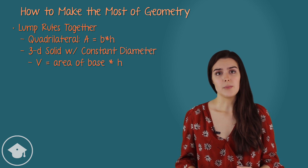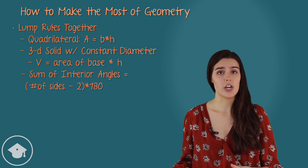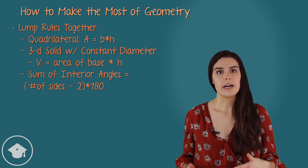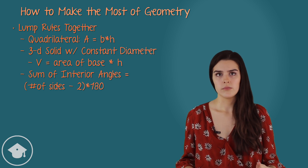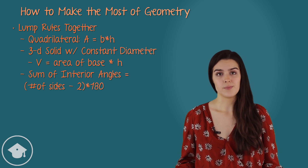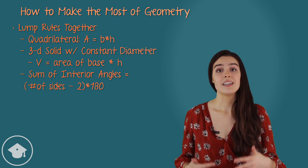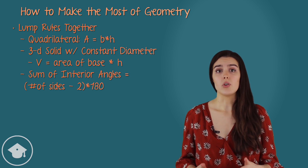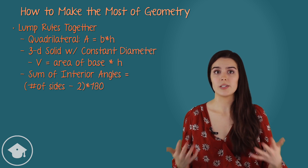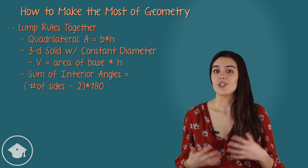Third, rather than memorizing the sum of the interior angles for each polygon, simply know that we can find it by taking the number of sides the shape has, subtracting 2, and multiplying the result by 180. So a triangle has 3 sides; subtracting 2 gives us 1; multiplying by 180 gives us a total of 180 degrees. For a quadrilateral, we have 4 sides; subtracting 2 gives us 2; multiplying by 180 gives us 360 degrees. This is particularly useful for shapes with more sides, such as octahedrons and nonahedrons, which can appear on test day.